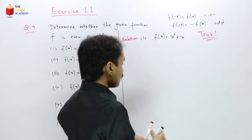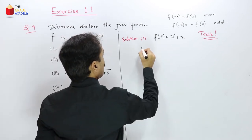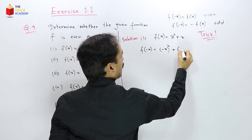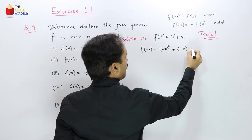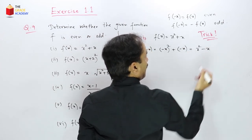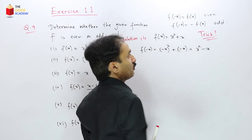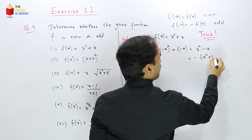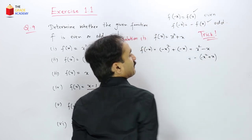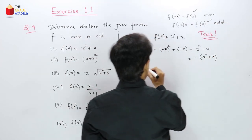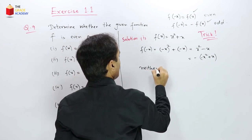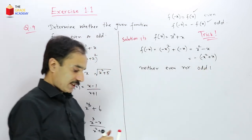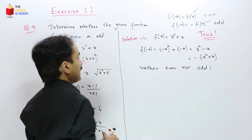For f(x) = x² + x: x² has even power and x has odd power — powers are mixed. So we predict neither even nor odd. Checking: f(−x) = x² − x, which is neither f(x) nor −f(x). Therefore f(x) is neither even nor odd.